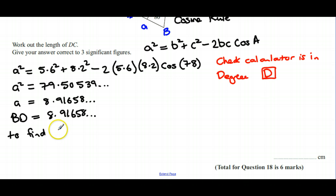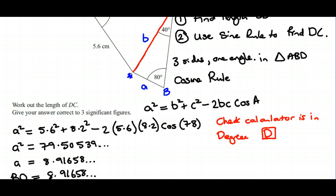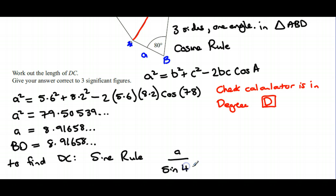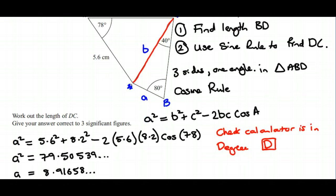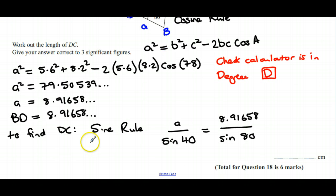So we're going to find DC now. We've got the sine rule, which is the side you're looking for divided by sine of the angle opposite, which is 40, and that's equal to the side you've got, which is what we worked out in the first part of the question, divided by sine of the angle opposite, which is 80.